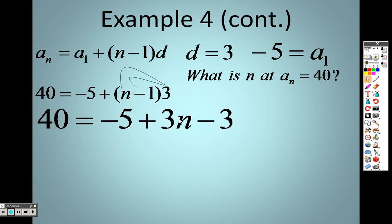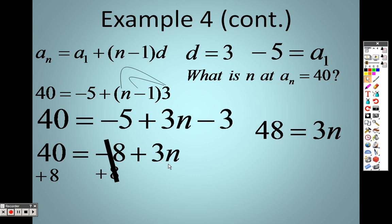So, I get 3n minus 3, and I still have that negative 5. I combine my like terms. I have a negative 5 and a negative 3, so I have negative 8 plus 3n. And to solve that equation for n, I just simply add 8 on both sides to get 48 equals 3n. Divide both sides by 3, and I end up getting n equals 16. So, what I'm saying is the 16th term is 40. That's what we're saying. The 16th term is 40.